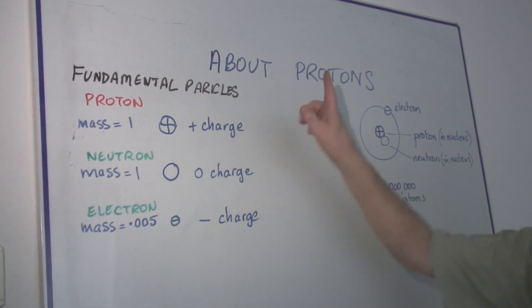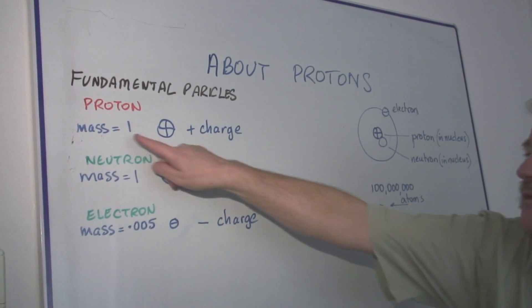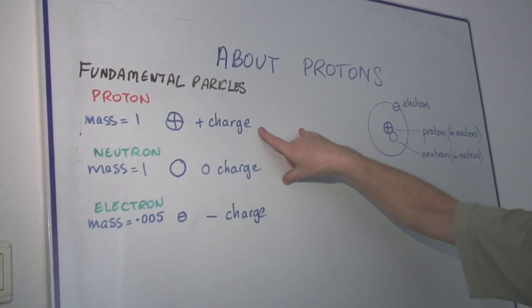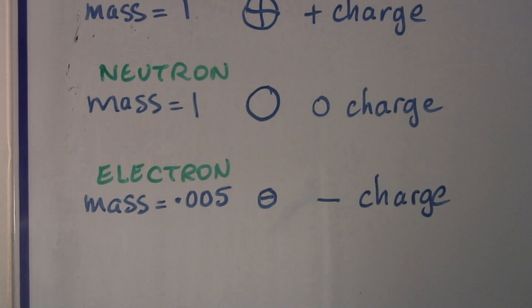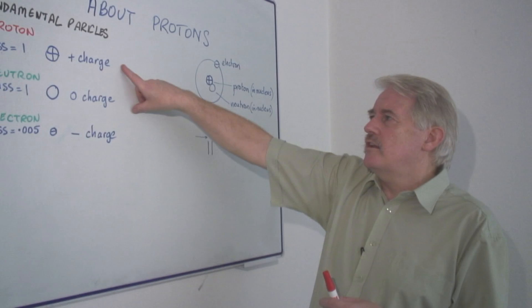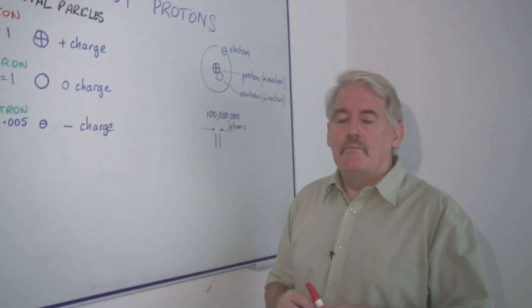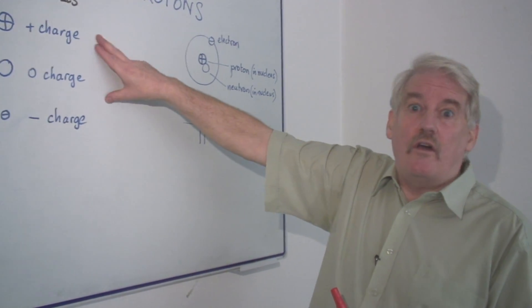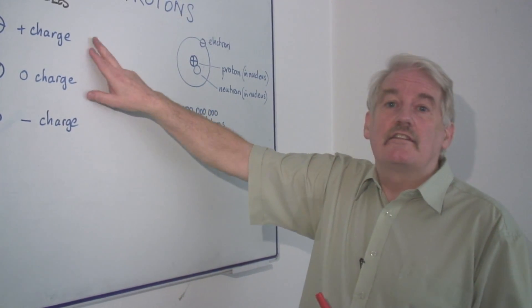The proton, which is our subject at the moment, is a positively charged particle. It has a positive charge. There is a negatively charged particle, the electron. But we're interested in the proton at the moment. And the proton is very important because all matter is based on the number of these that it contains.